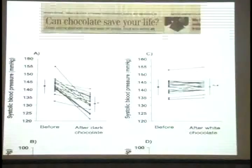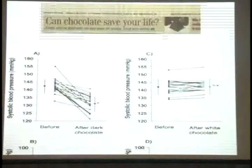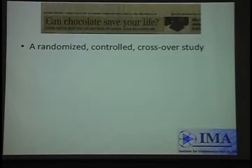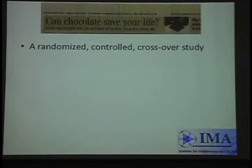The lingo for this is a randomized, controlled, crossover study. They were randomized to get either dark chocolate first or white chocolate, so the order was balanced and every patient served as his own control. But wait — 20 people, two weeks. This is not convincing. By any measure, this is a very small study. Why did they even do it?